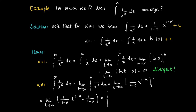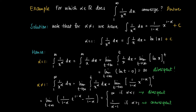Now we have two sub-cases. Where alpha is smaller than 1, we would have t to the power of something positive, which goes to infinity, so the integral diverges. And if alpha is larger than 1, we would have t to the power of something negative — a vanishing term t to the power (1 minus alpha) — and in that case we find the limit equals 1 over (alpha minus 1). So if alpha is larger than 1, the integral converges, and in all other cases the integral is divergent.